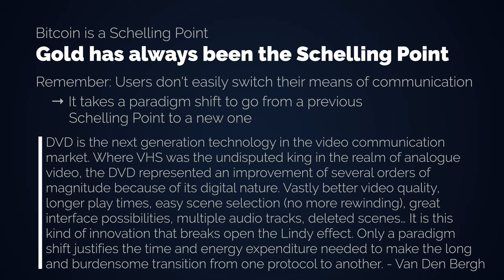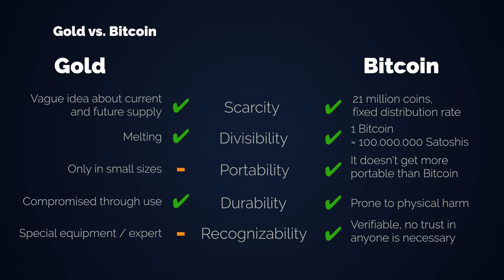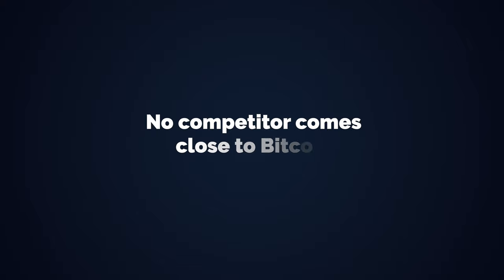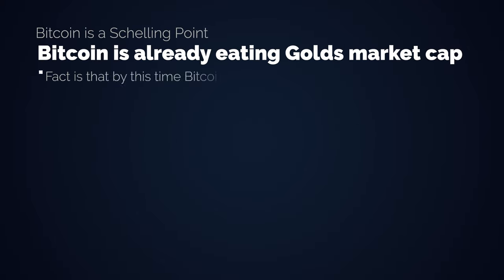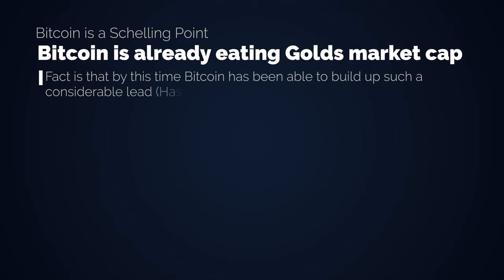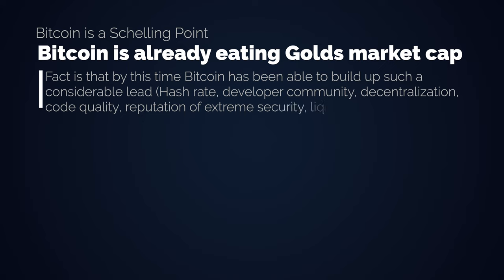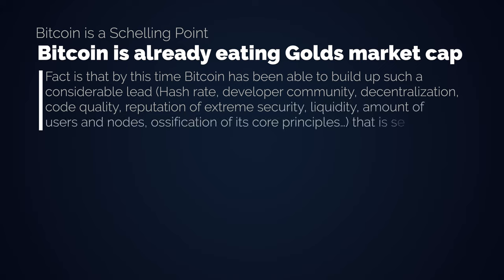Bitcoin is that kind of monopoly-breaking paradigm shift for the technology we call money. It's at least 10 times better than gold in all monetary properties as discussed in previous videos, and there is no competitor that comes close. By this point, Bitcoin has been able to build up a considerable lead in hash rate, developer community, decentralization, code quality, reputation for extreme security, liquidity, number of users and nodes, and ossification of its core principles — making it virtually impossible to break its Lindy effect.